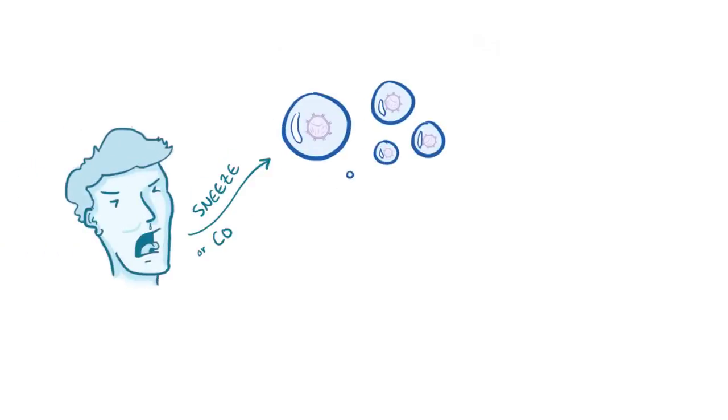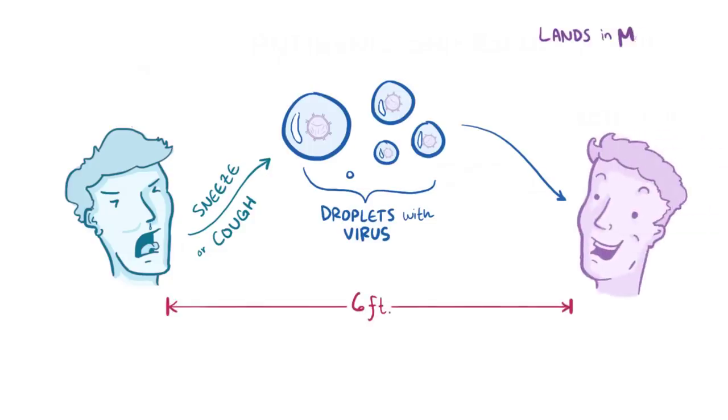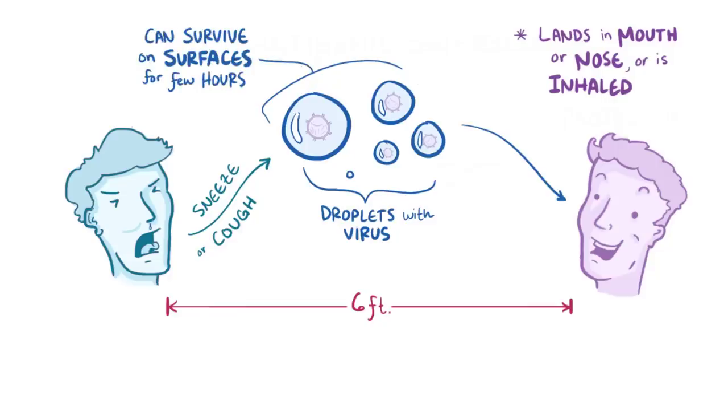The flu is transmitted when an infected person sneezes or coughs, which spreads thousands of droplets containing the virus into the local area, up to about 2 meters or 6 feet away. These droplets can then land in the mouths or noses of people nearby, or get inhaled into the lungs. The virus can also survive on surfaces for a few hours, so it's possible to get the virus by touching a surface, like a contaminated doorknob, and then touching your own eyes, nose, or mouth.